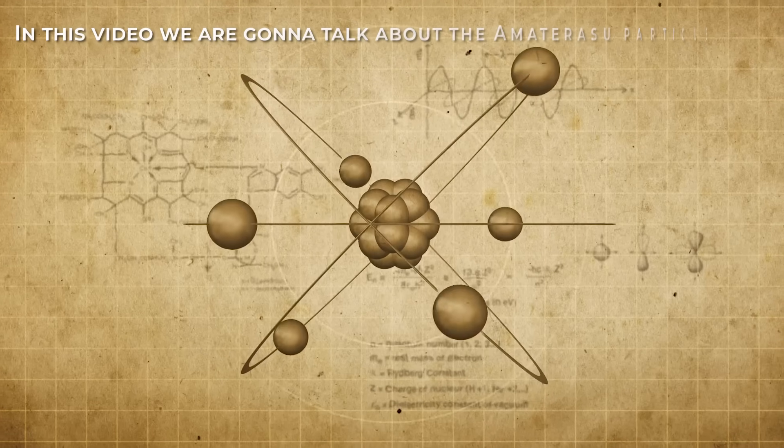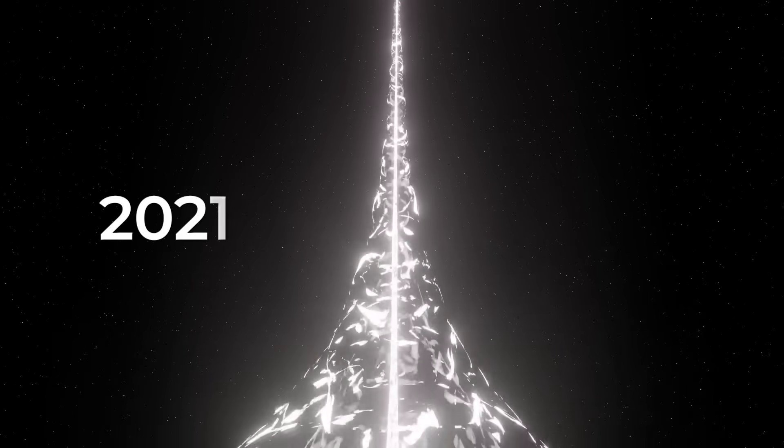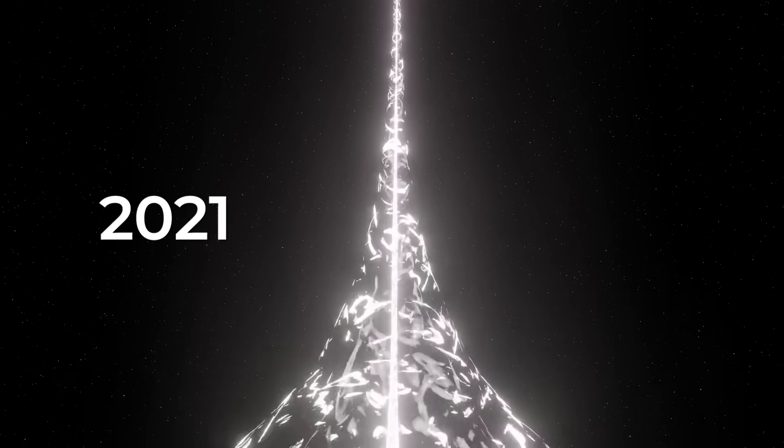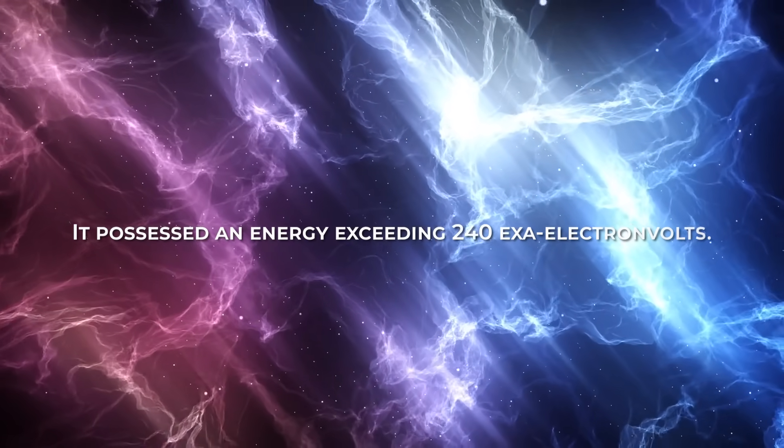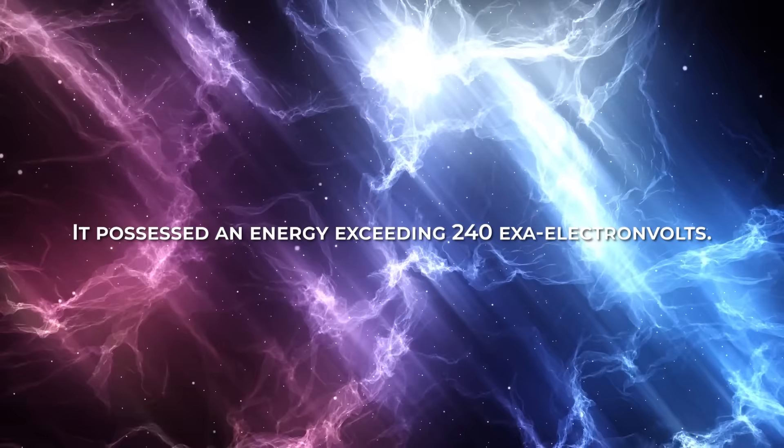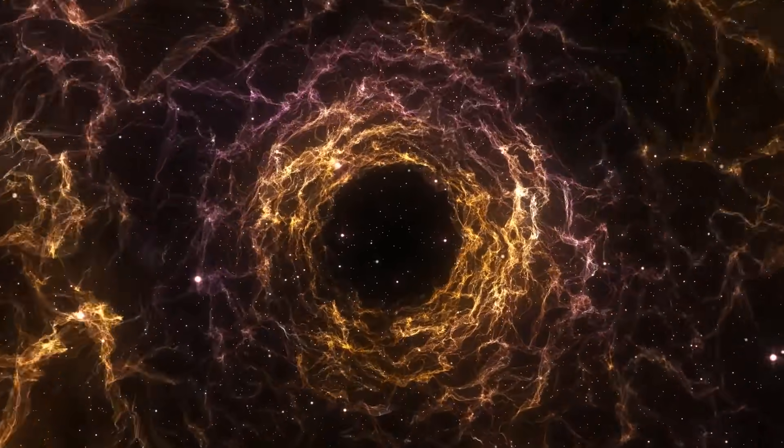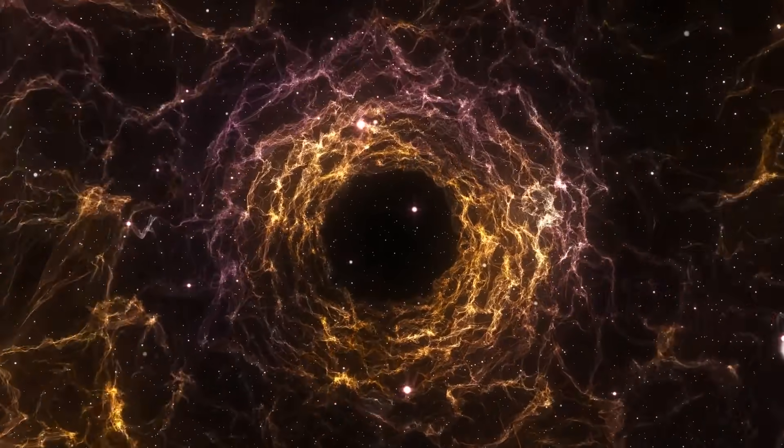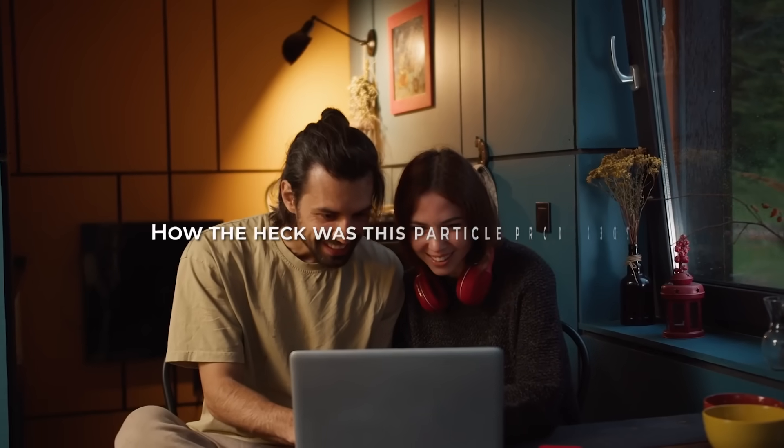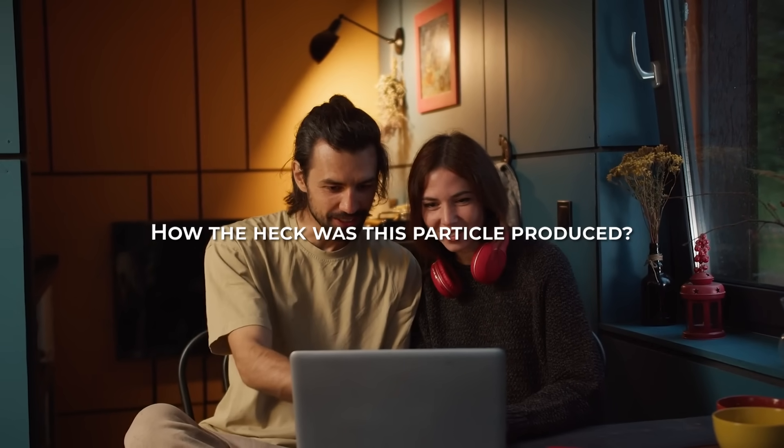In this video, we're going to talk about the Amaterasu particle. This was a cosmic ray detected in 2021. It took scientists two years to identify it, but now we know it possessed an energy exceeding 240 exa-electron volts. And even more exciting, it came from the local void, a region in the universe that, as far as we know, is essentially empty. So, how the heck was this particle produced? Keep watching the video to get to know more about it.